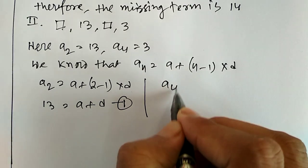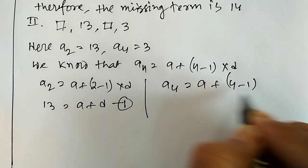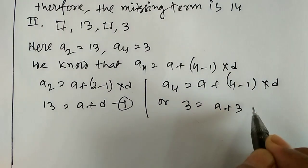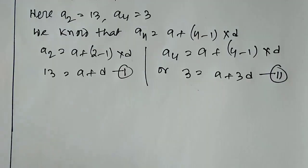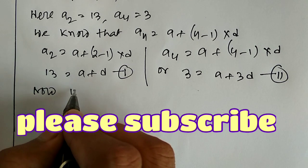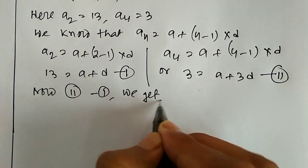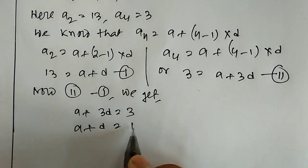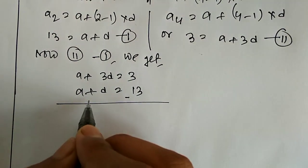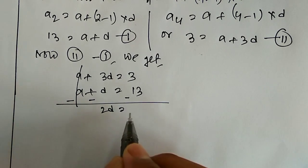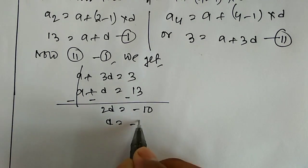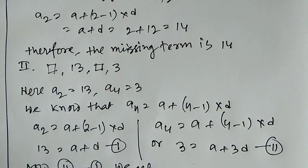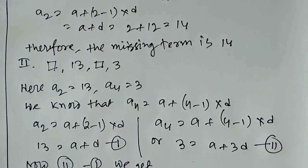And a4 equals a plus (4 minus 1) into d, so 3 equals a plus 3d. This is equation number 2. Subtracting equation 1 from equation 2: a plus 3d minus a minus d equals 3 minus 13, giving 2d equals minus 10, so d equals minus 5.